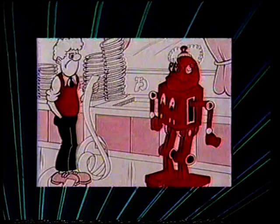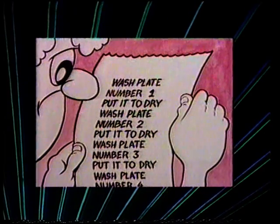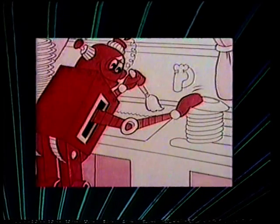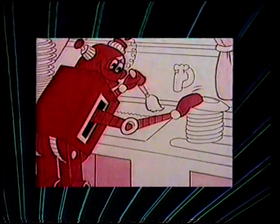Suppose you had a robot to wash the dishes for you. You could stand at its side and tell it what to do: wash plate number one, put it to dry, wash plate number two, put it to dry, and so on. The trouble is, by the time you reach plate 100, the last one, you're absolutely worn out. Of course there's a much better way — all those instructions were the same, only the plate number changed.